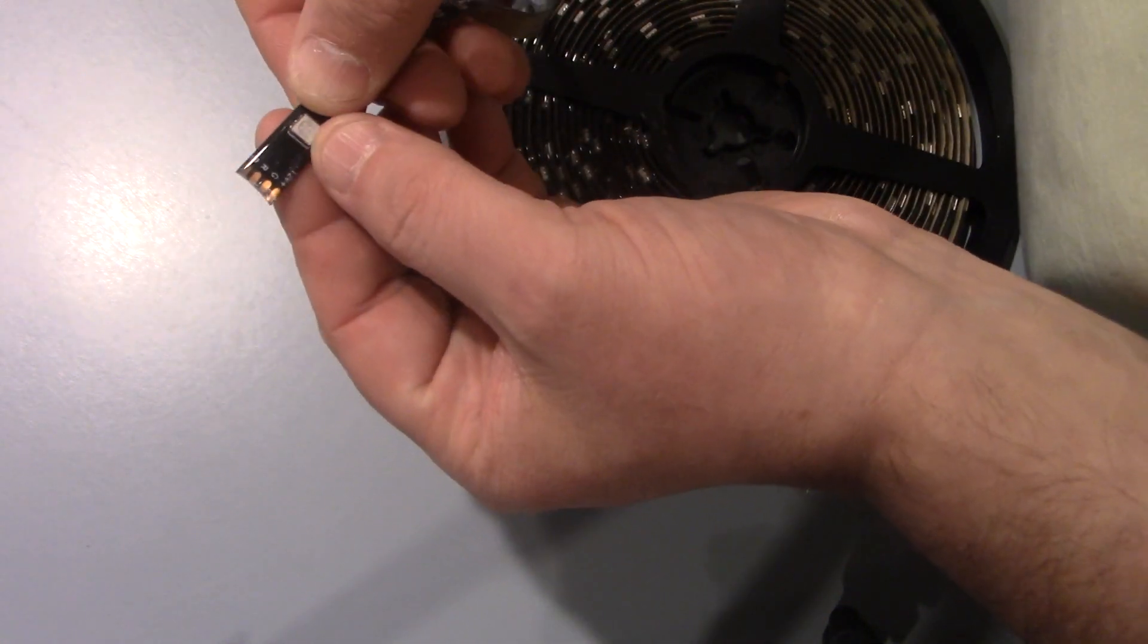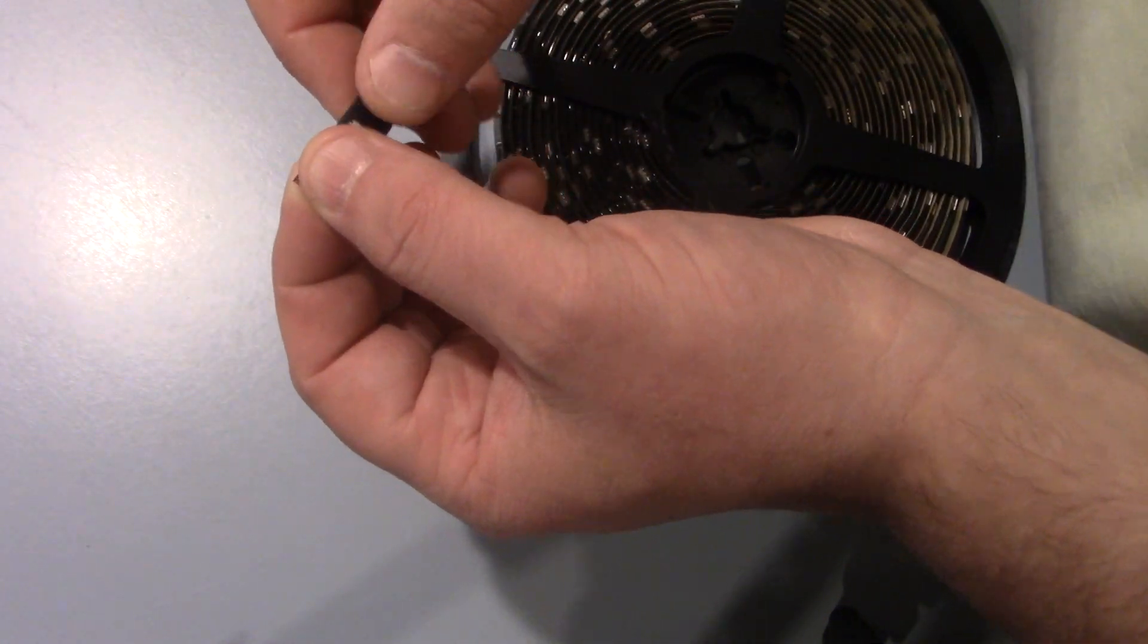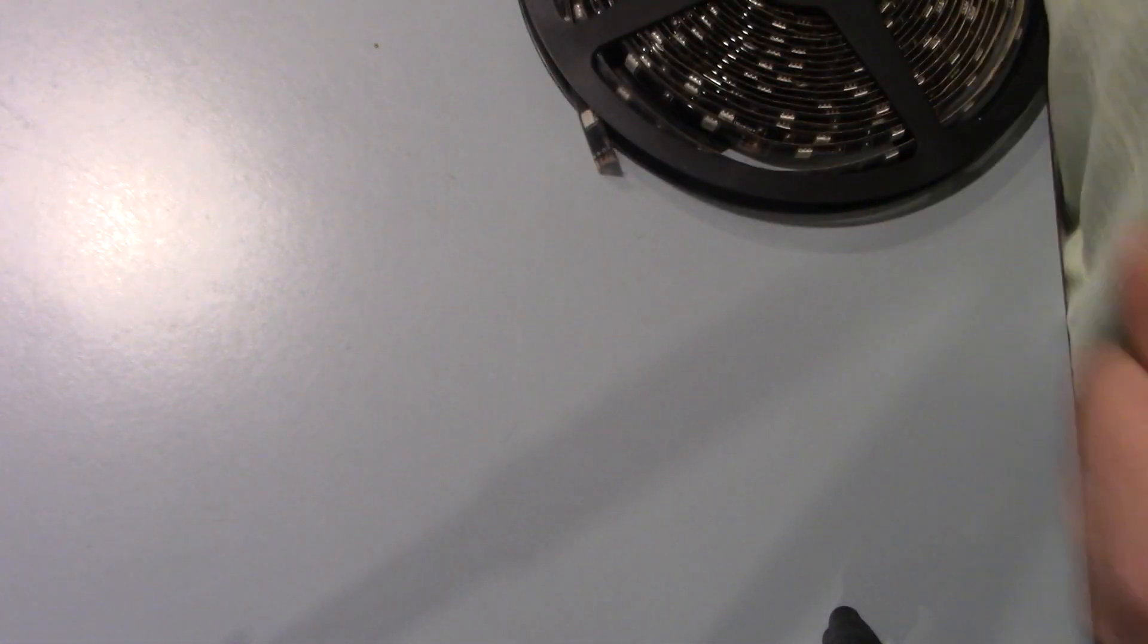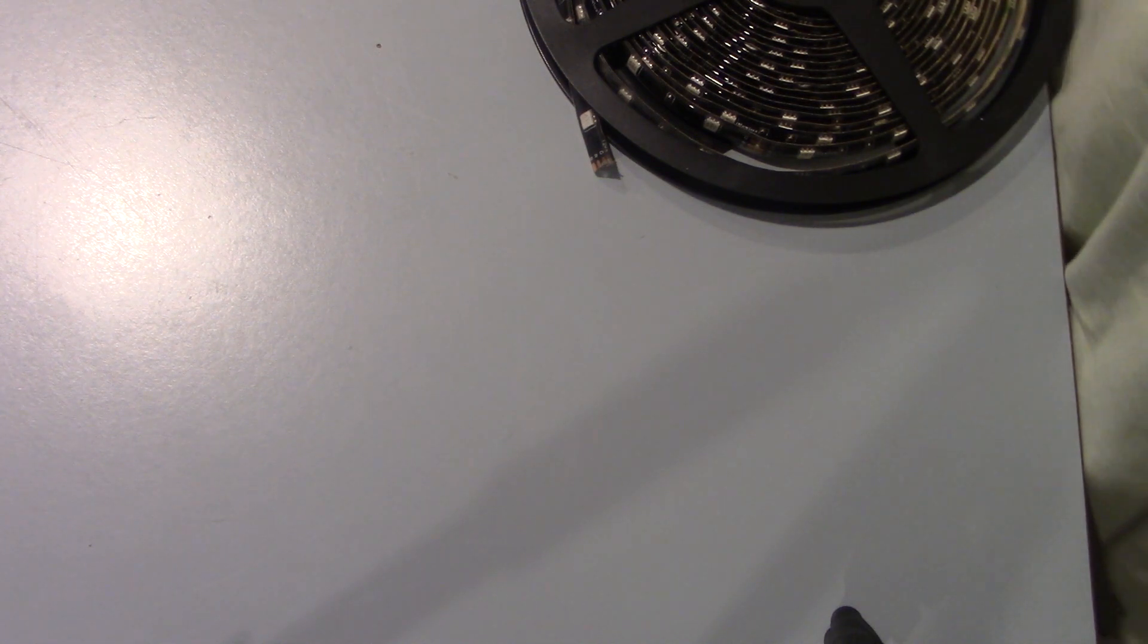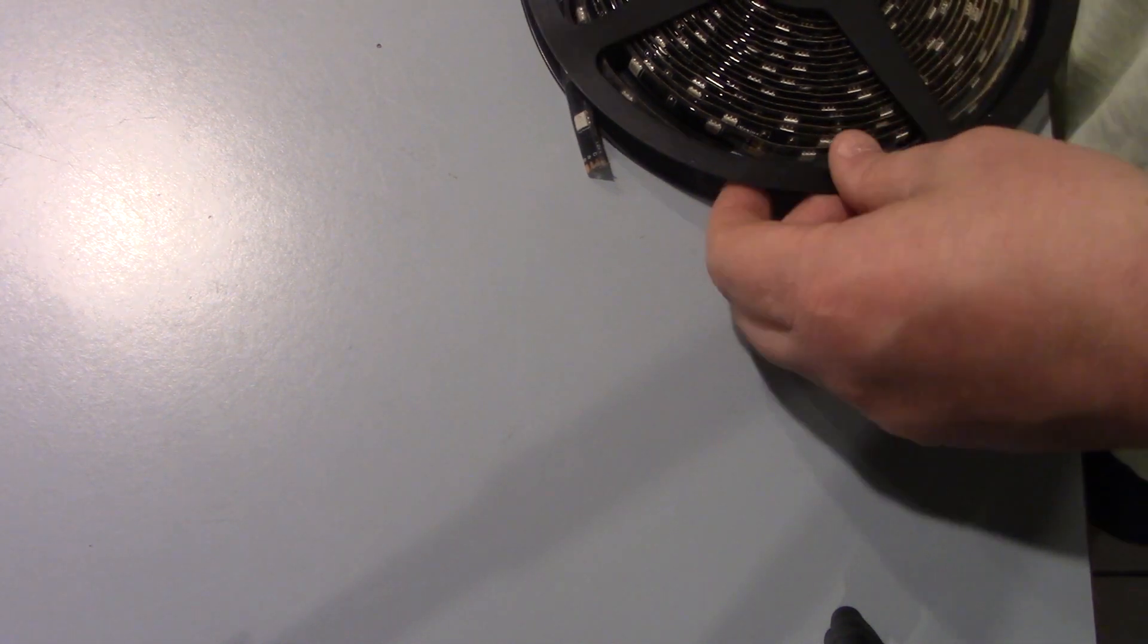So to go through a list of what we're going to need for this, we're going to need the Nexlux Wi-Fi wireless LED lights. This is a 32-foot section I have. This does run on 12 volts, so we'll go over everything. This is compatible with Alexa, Google Home, IFTTT. It works on Android and iOS, and it does have GRB, BGR, and RGB LED strip lighting.